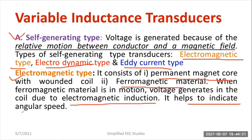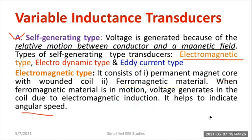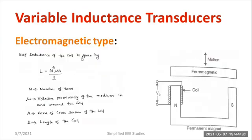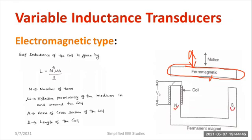It helps to identify the angular speed. Looking at the circuit diagram of electromagnetic type variable inductance transducer: this is the ferromagnetic material, where the moving body will be directly connected to it. We have a permanent magnet with north pole and south pole, and here we are placing the coil. These are the turns of the particular coil. Imagine this in three-dimensional manner to better understand.